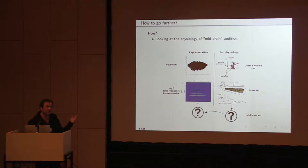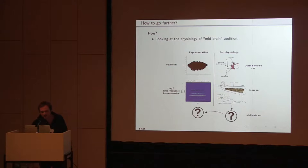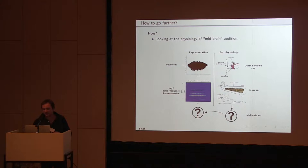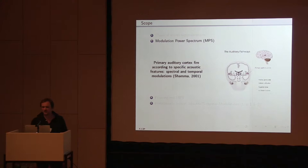The question is now how to go further. We used the same kind of approach as in previous talks — we based it on the physiology of the ear. We observed that the waveform corresponds to the peripheral auditory system, and the time-frequency representation, either logarithmic or linear, globally corresponds to what happens in the cochlea and the basilar membrane. So we can look at what happens just after — the step after the cochlear processing — namely the modulation power spectrum.